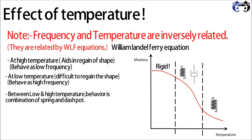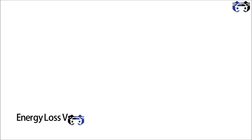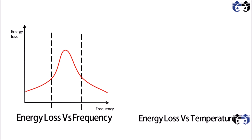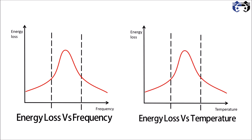Now let's see the curve of energy loss versus frequency. On the y-axis we have energy loss and on the x-axis we have frequency. In the moderate range of frequency you can see a peak. This peak occurs because in this moderate range the tire behaves as a viscoelastic material, which exhibits hysteresis loss. That's why in this region we have the maximum energy loss, and this is the region where the tire is generally operated.